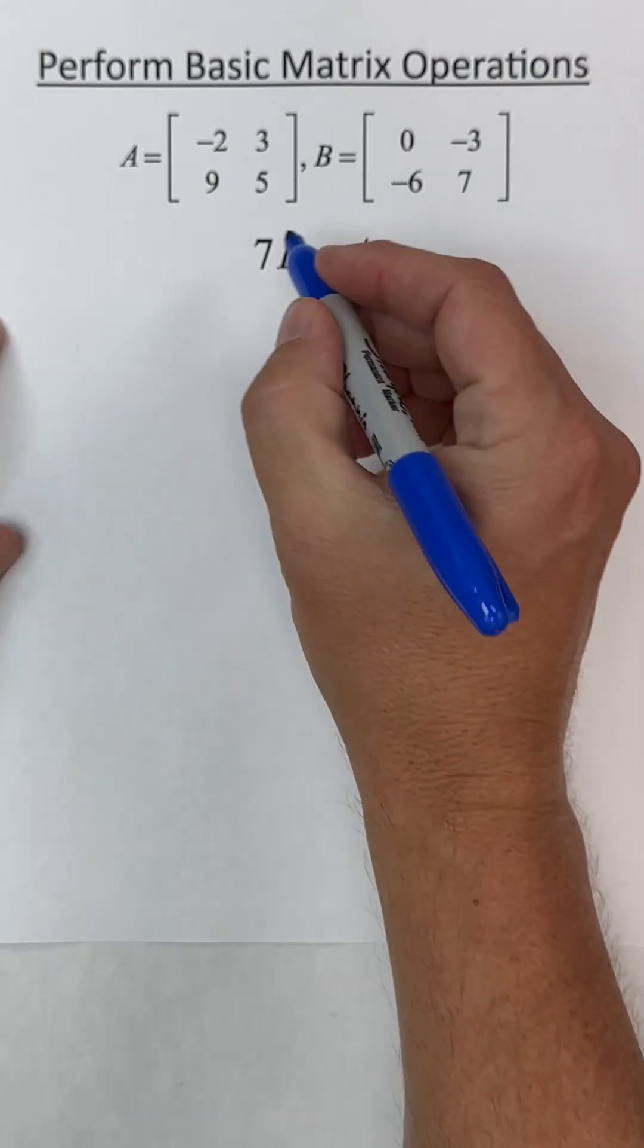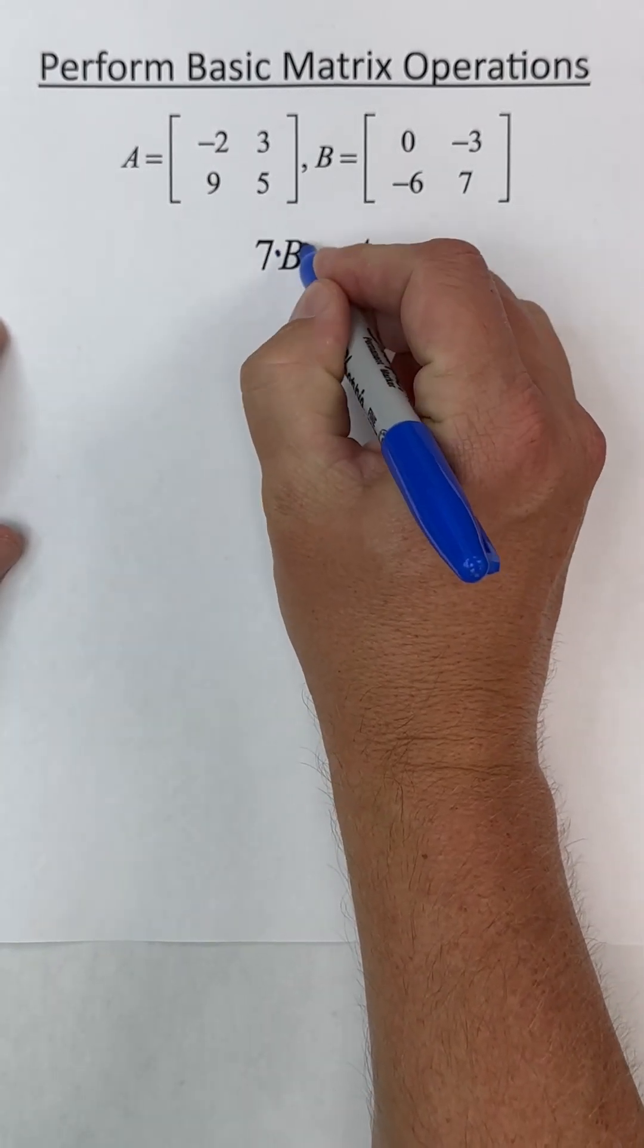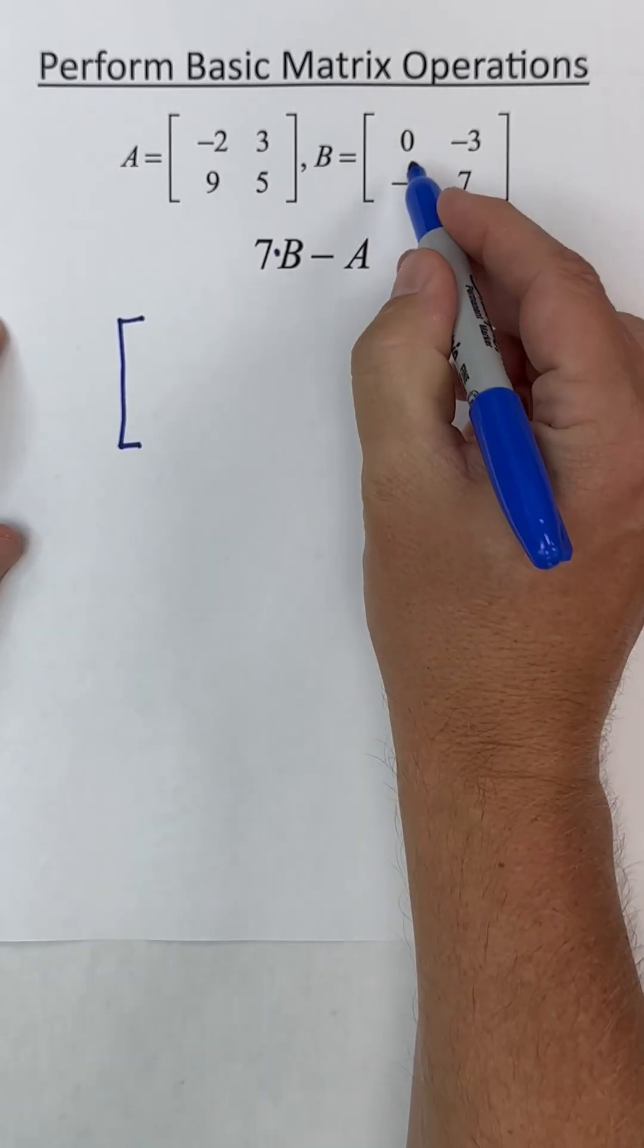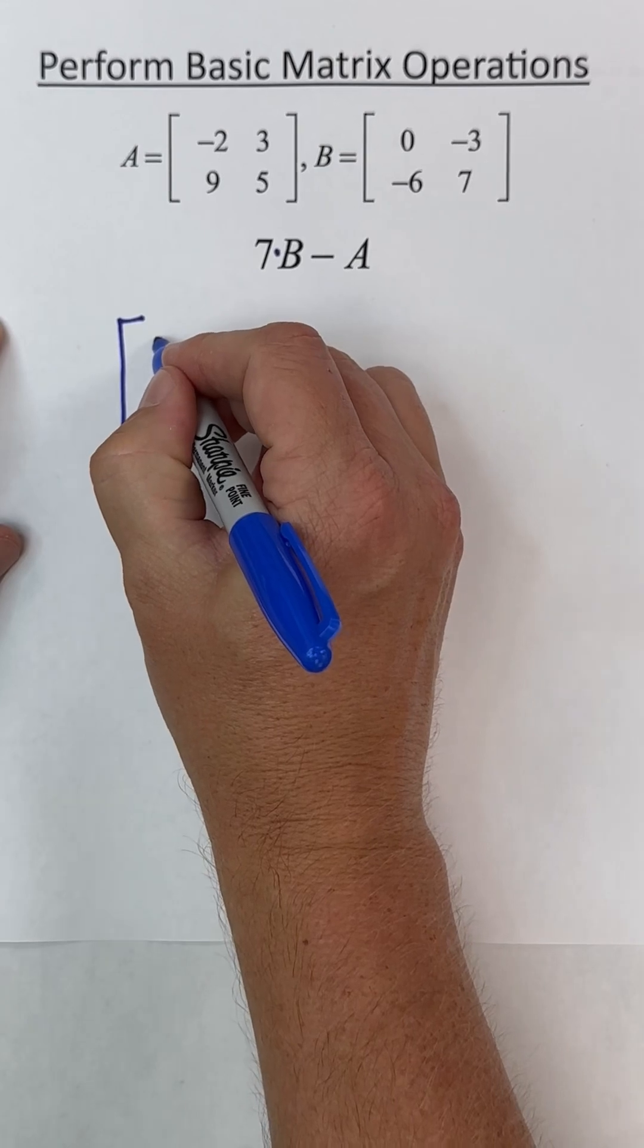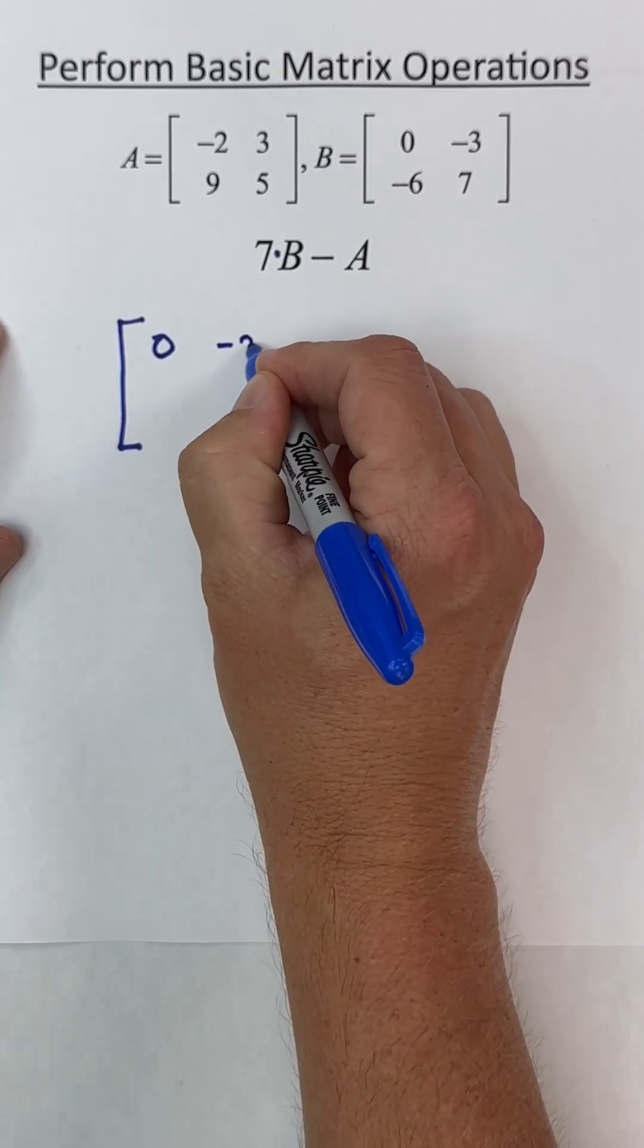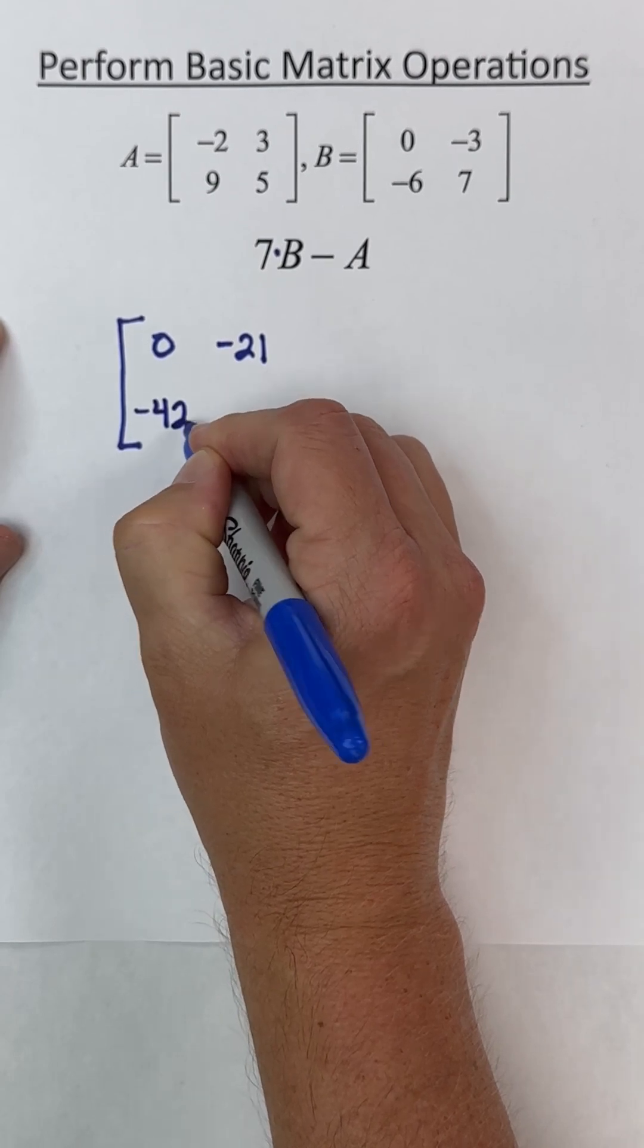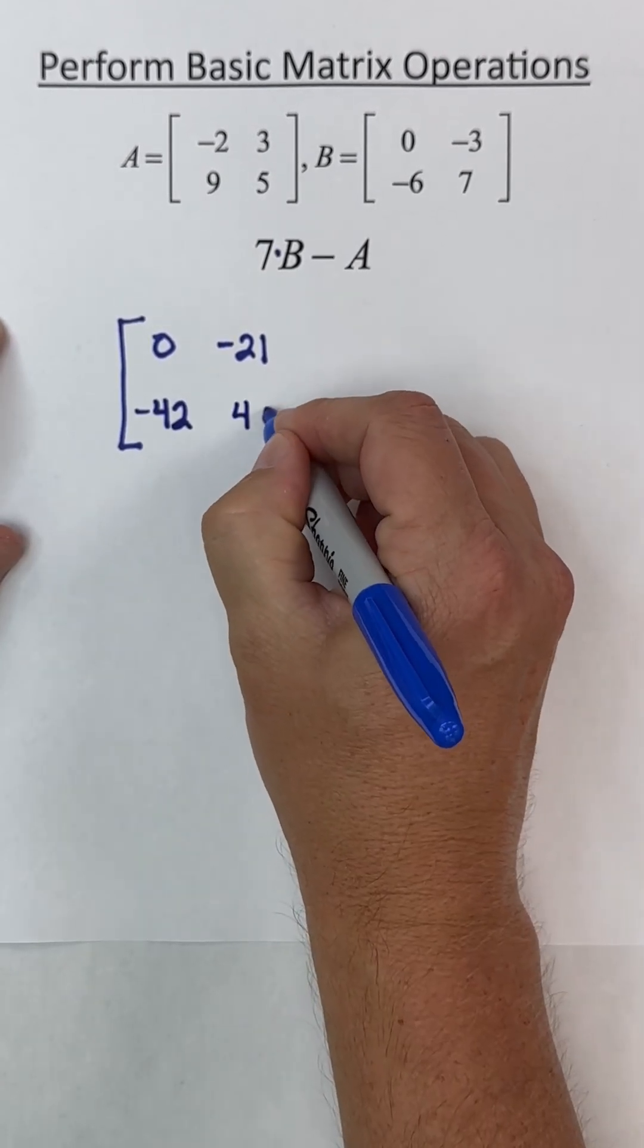So 7B means take everything in matrix B and multiply it by 7. So let's do that here first. All of these numbers times 7. So we're going to have 0, negative 21, negative 42, and 49.